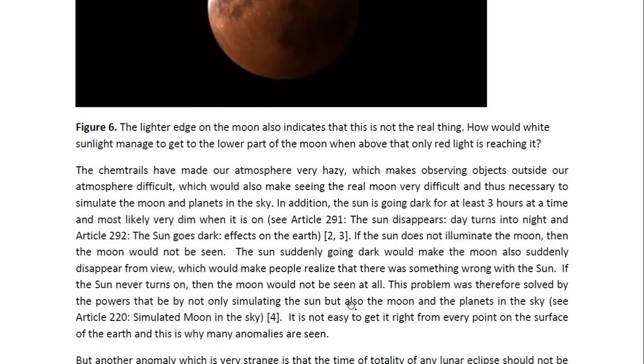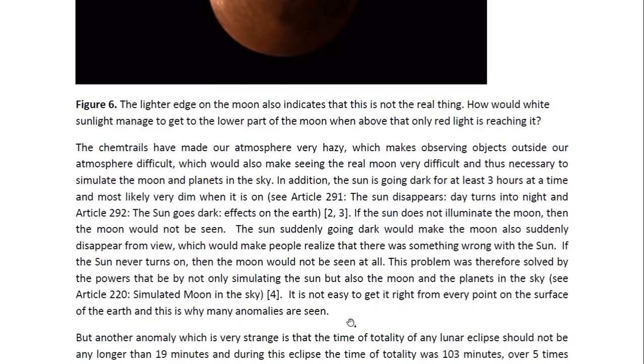If the sun does not illuminate the moon, then the moon would not be seen. The sun suddenly going dark would make the moon also suddenly disappear from view, which would make people realize that there was something wrong with the sun. If the sun never turns on, then the moon would not be seen at all. This problem was therefore solved by the powers that be by not only simulating the sun, but also the moon and the planets in the sky.